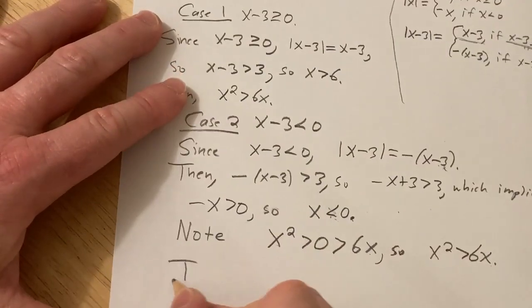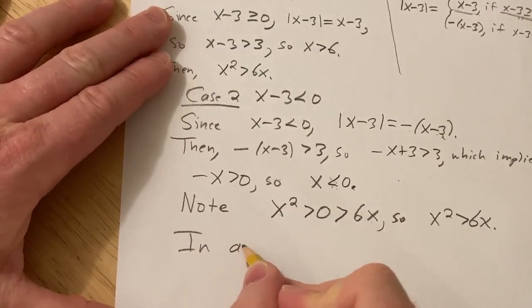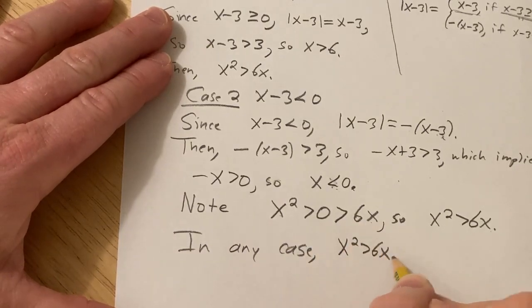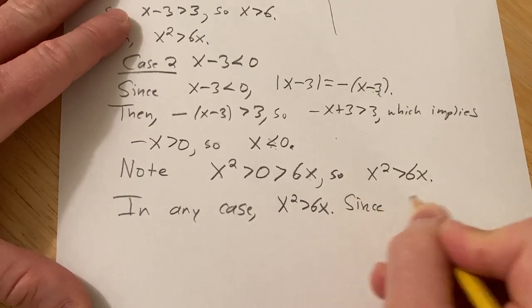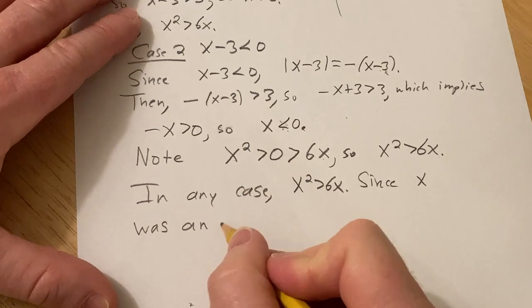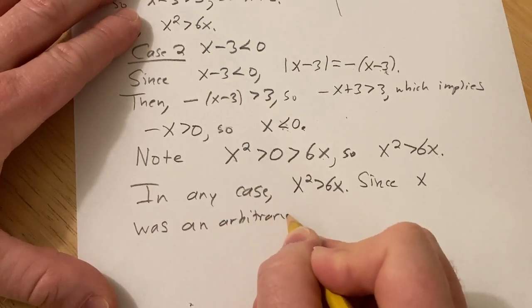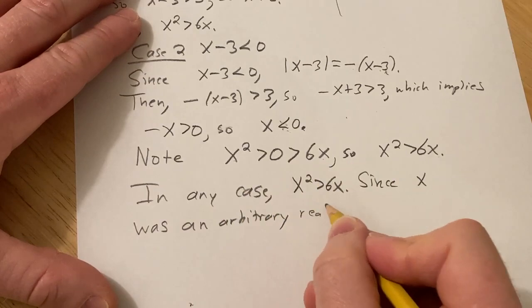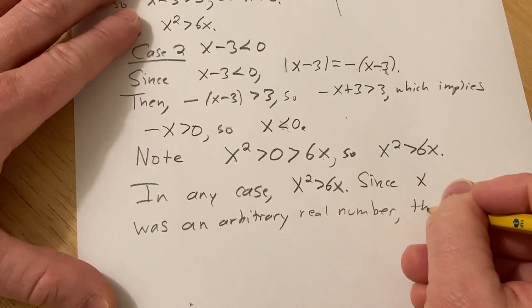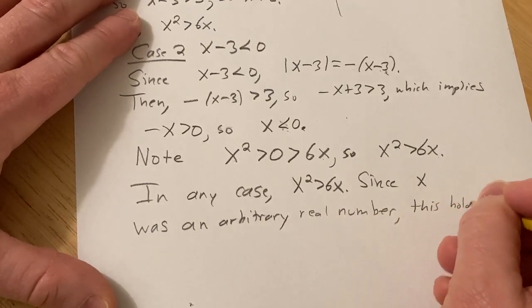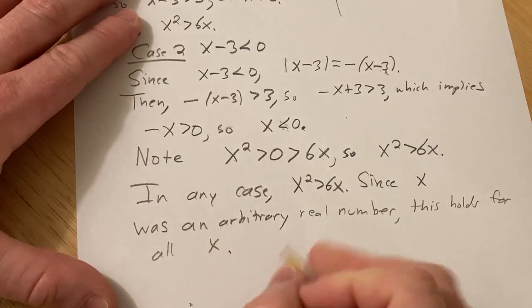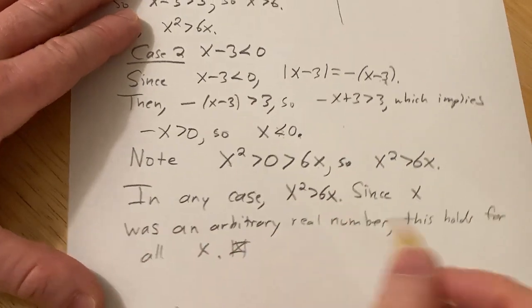So in any case, x squared is bigger than 6x. And then you can say, since x was an arbitrary real number, this holds for all x. And that completes the proof.